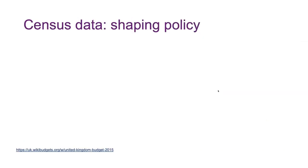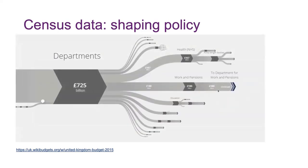One of the major points of census data is shaping policy. This is the UK budget for 2015, and how money is allocated is very much down to the data within the census.